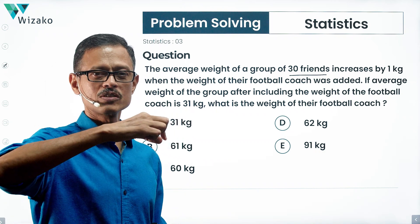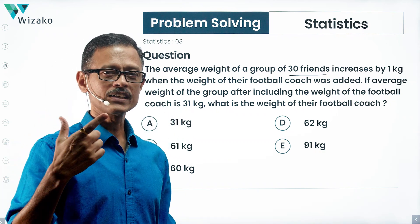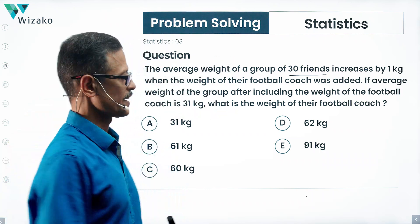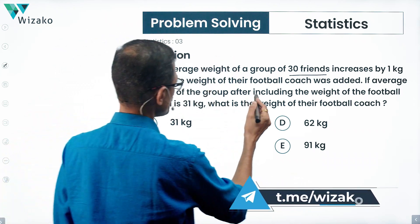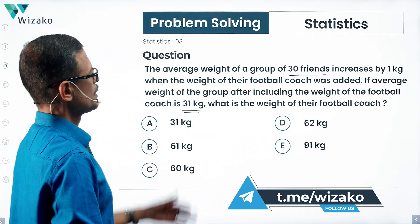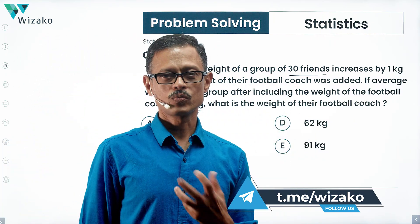30 friends add the football coach also to the group, then the average weight goes up by 1 from what it was when we just looked at the average weight for 30 friends. The average weight of the group after including the weight of the football coach is 31. They have even given that number. What is the weight of their football coach is what we have.